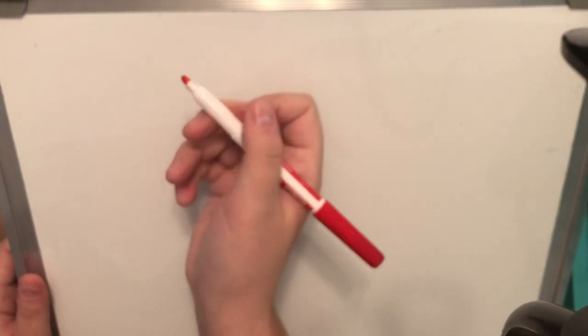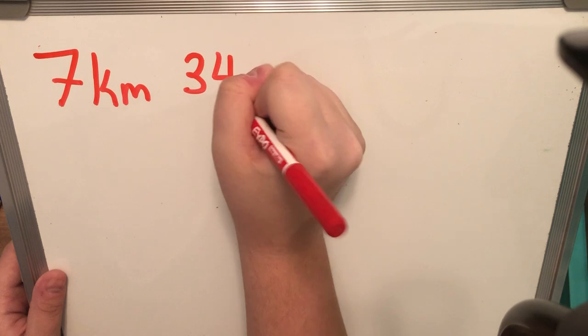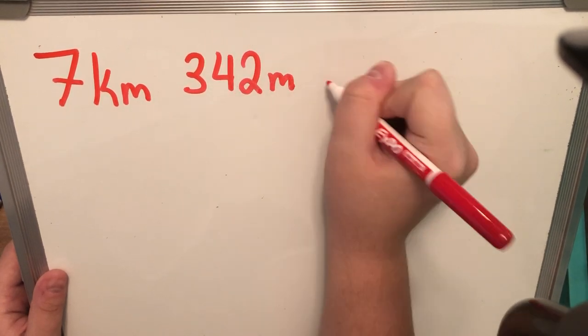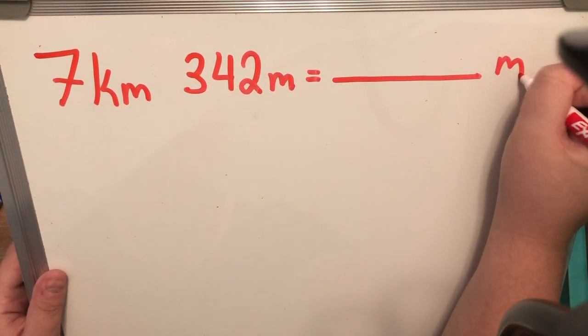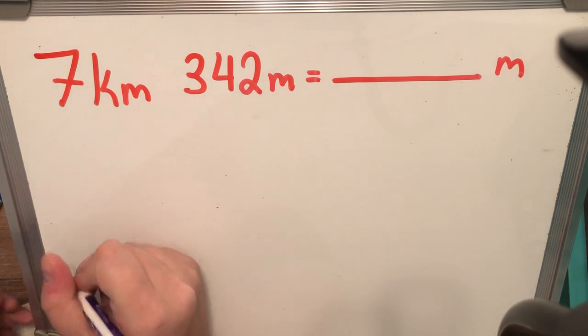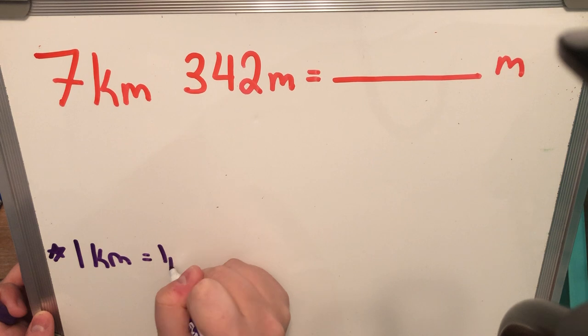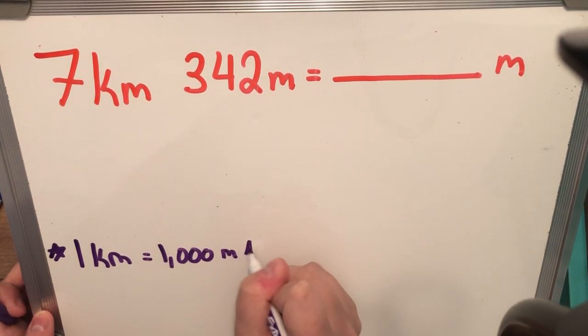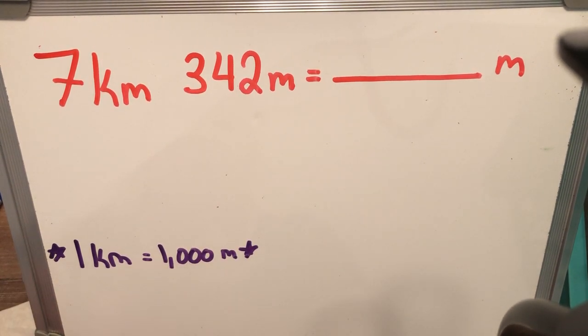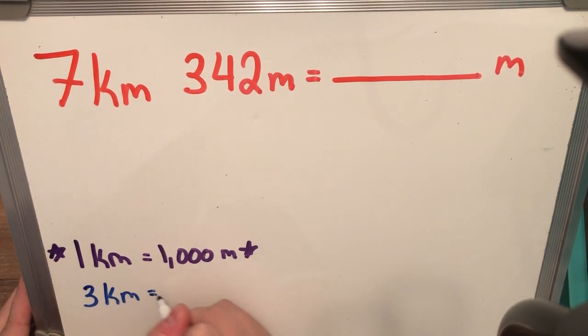All right, so I have, for example, 7 km and 342 m. And what we're going to do is we're going to see what this problem is. This number is going to be all now in meters. Now, my golden ticket rule from before is that 1 km is worth 1,000 m. So that also means that 2 km is worth 2,000 m. 3 km is worth 3,000 m.